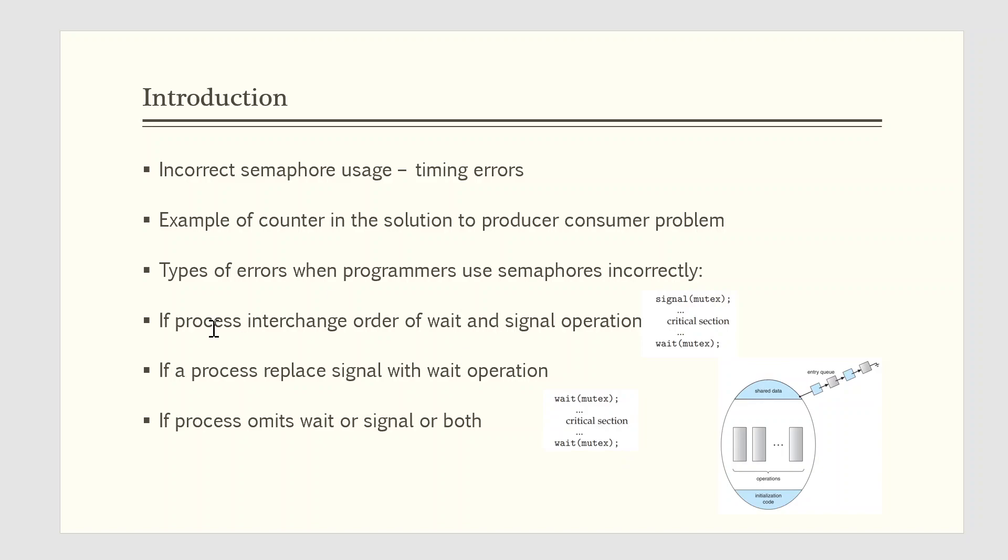Suppose that a process omits the wait of mutex or the signal of mutex or both. In this case, either mutual exclusion is violated or a deadlock will occur. These examples illustrate that various types of errors can be generated easily when programmers use semaphores incorrectly. To deal with such errors, researchers have developed high level language constructs.